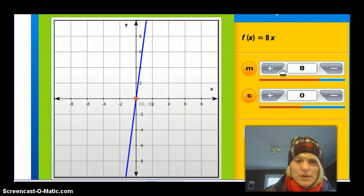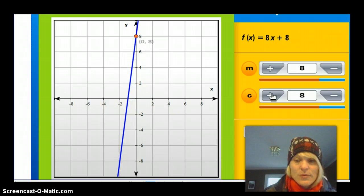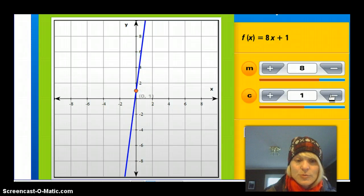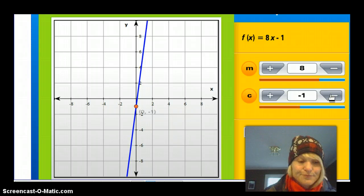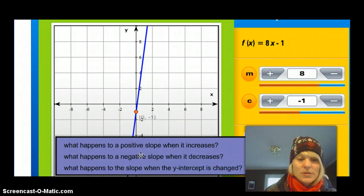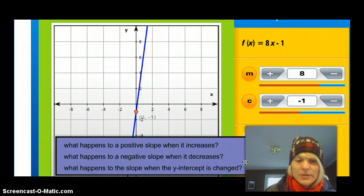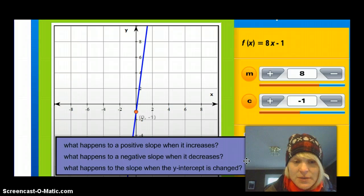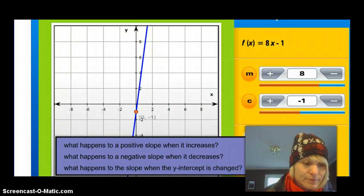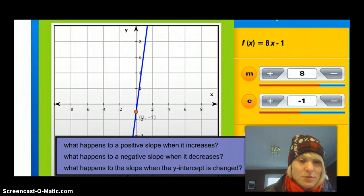And then this is your y-intercept, so it's just moving it up and down the y. So when I move it up and down the y, here's your third question. When I move it up and down in the y, does the steepness of the slope change? So three questions. What happened to a positive slope when it increased? What happens to the negative slope when it decreases? And what happens to the slope when the y-intercept is changed? Now, the great thing about a video is if I went too fast, you can pause this, go back, and watch what happened when we increased and decreased the slope. I want you to write a couple answers to those questions.